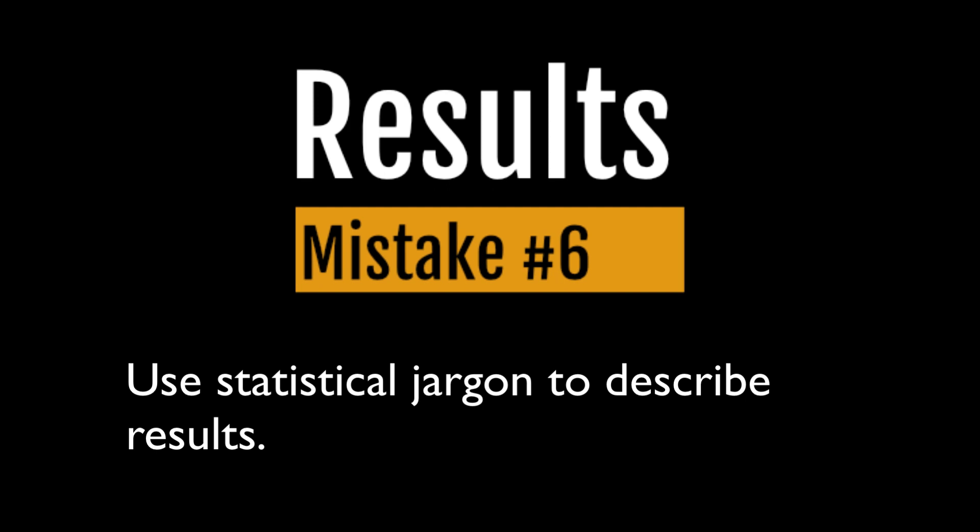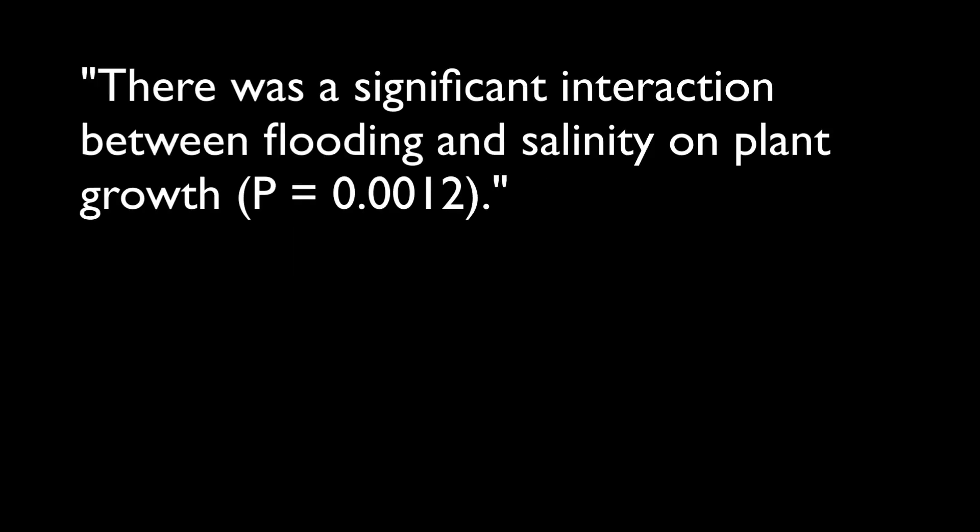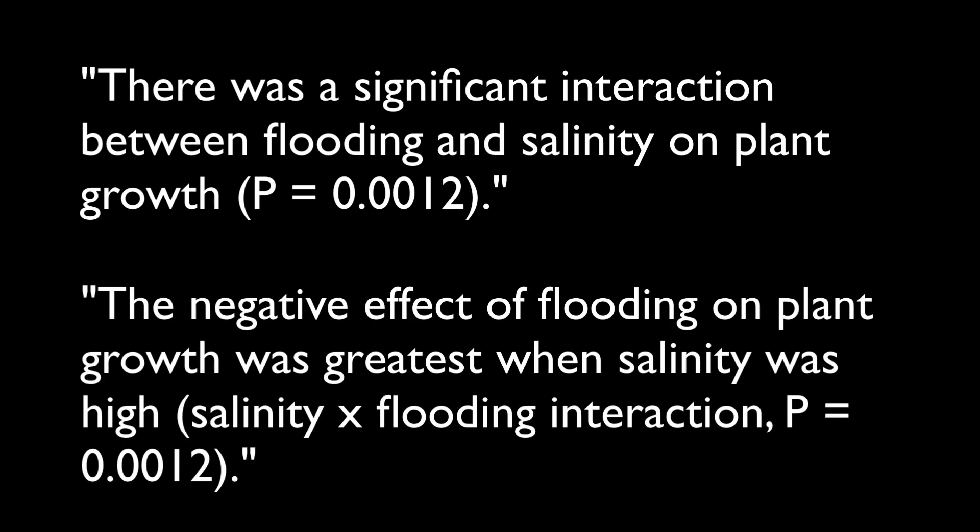Another mistake people make in writing the results is to use statistical jargon to describe results. For example: 'there was a significant interaction between flooding and salinity on plant growth.' This statement fails to tell the reader what happened. Instead, say: 'the negative effect of flooding on plant growth was greatest when salinity was high,' followed by the statistical outcome.